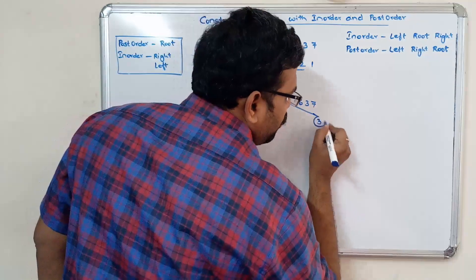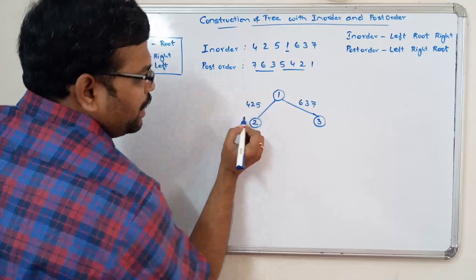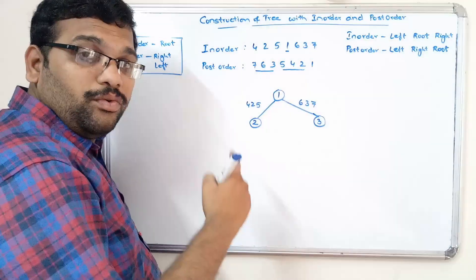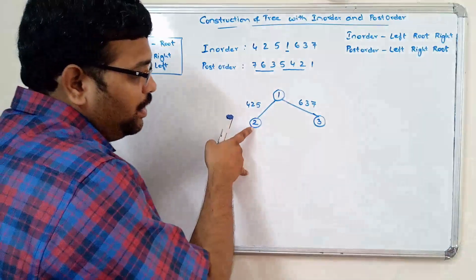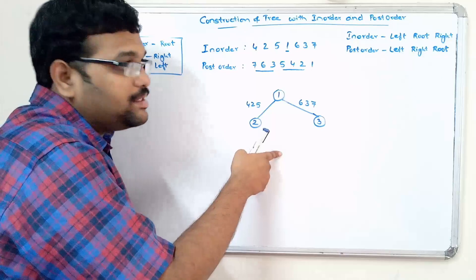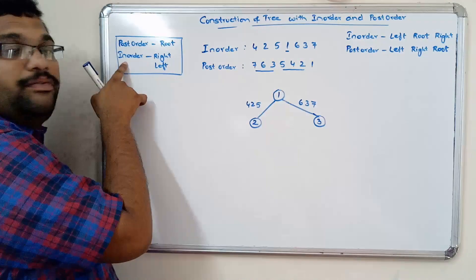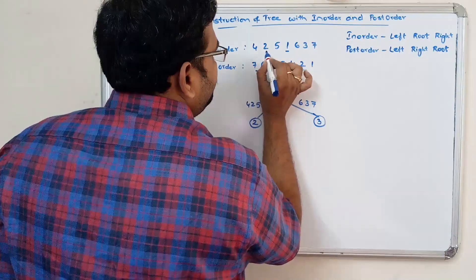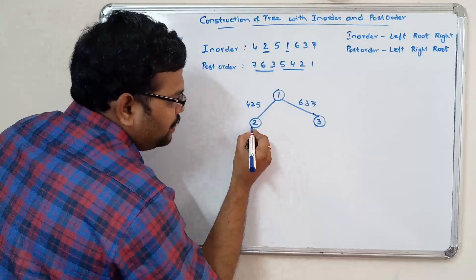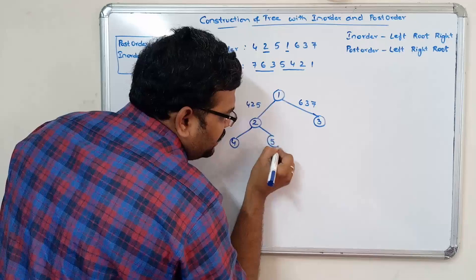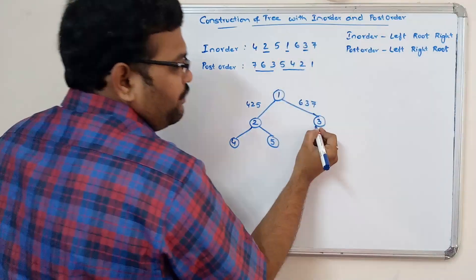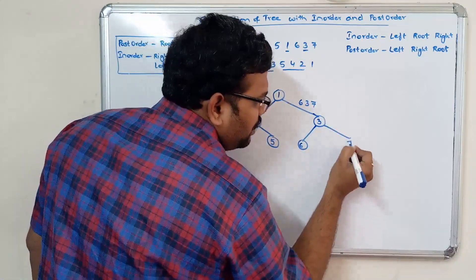Now there are two elements under each sub-root. We found 2 as the root of the left subtree and 3 as the root of the right subtree. Going with the inorder to find their children: 2 is the root node, 4 is on the left side and 5 is on the right side, so 4 is the left child and 5 is the right child. For 3 as the root, 6 is on the left side and 7 is on the right side.